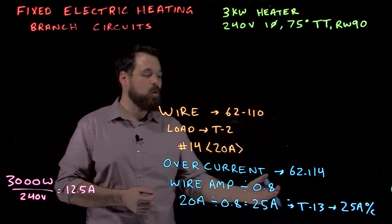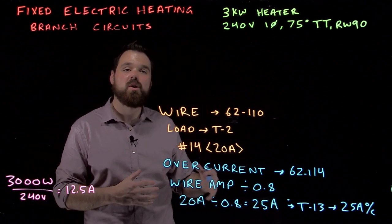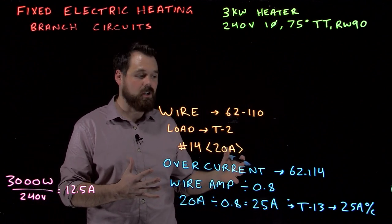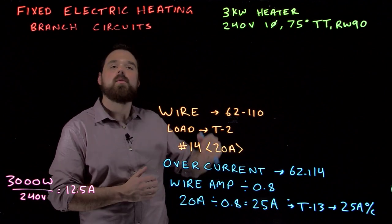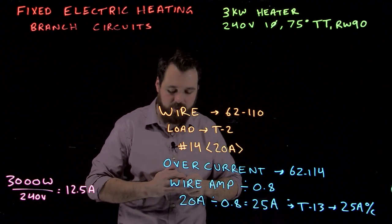If a 25 amp overcurrent did not exist, subrule 8 tells us we are allowed to go to the next higher level. So if there was no 25 amp breaker, we would go up one level and we would get to a 30. But there is a 25, so we are going to take a 25.